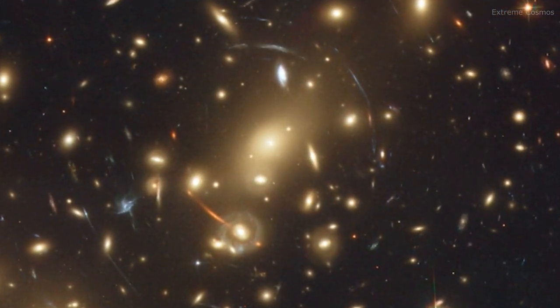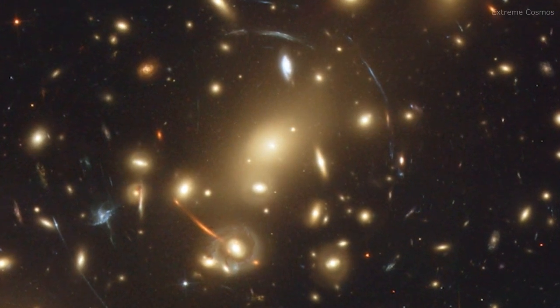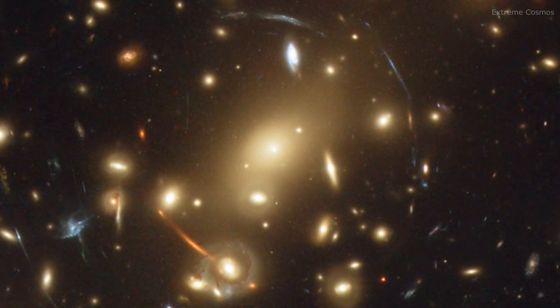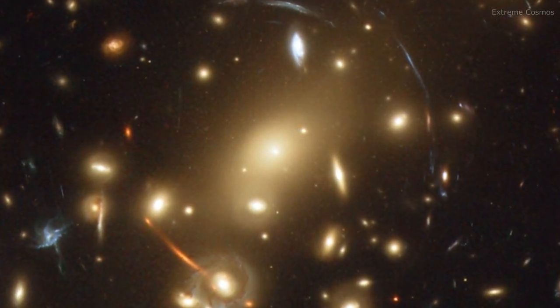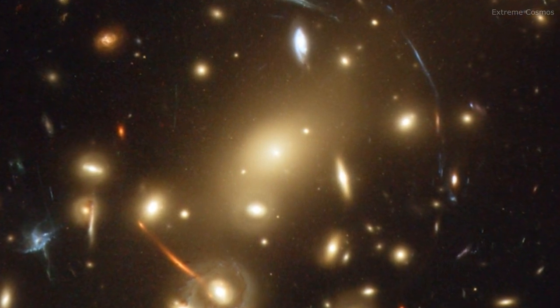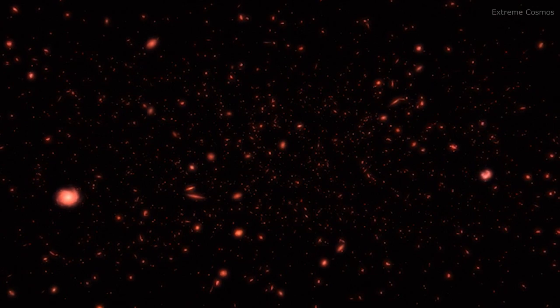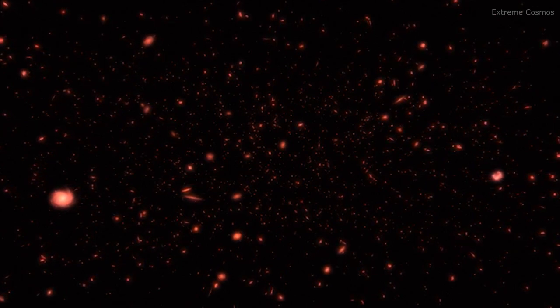Hubble makes use of this magnification effect to study beyond the sensitivity of its 2.4-meter diameter primary mirror, by showing us the most distant galaxies humanity has ever encountered. Hubble's observations of lensing effects have also given us a glimpse of the cosmos that will be unveiled by the upcoming NASA-ESA-CSA James Webb Space Telescope.